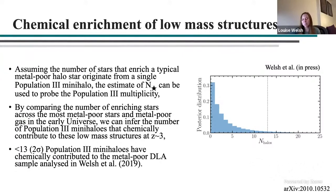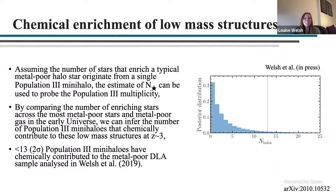Another interesting direction is to look at the chemical enrichment of low-mass structures in the early universe, specifically the near-pristine gas in metal-poor DLAs. In previous analysis I estimated the number of enriching stars for these systems. By comparing the number of enriching stars across metal-poor DLAs and metal-poor halo stars — under the assumption that the number of stars enriching a typical halo star is comparable to the Population III multiplicity — we can infer the number of Population III mini-halos that contributed to low-mass structures at redshift three.